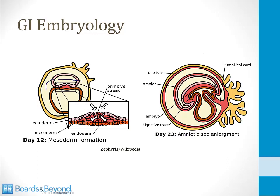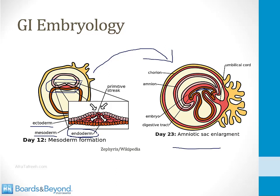A zoomed-in view of the embryonic disc — the interface between the amniotic cavity and the yolk sac — shows it is made up of three layers. The middle layer shown in red is the mesoderm. One outer layer is the ectoderm, shown in pink, and the other outer layer is the endoderm, shown in brown. The hollow tube from the yolk sac develops into the digestive tract, surrounded by endoderm, so the lining of the GI tract and many abdominal organs come from the endoderm.